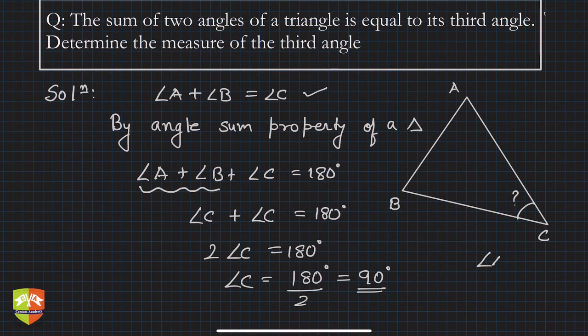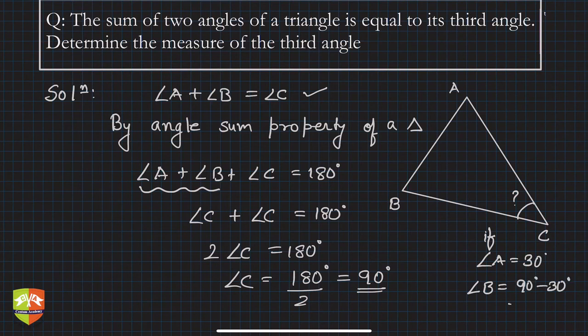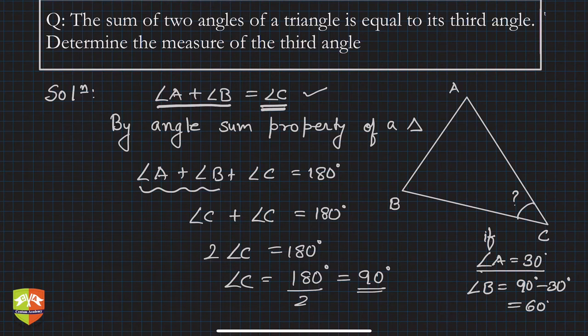In the same problem, let's say if angle A is given as 30 degrees, then you can find angle B as well. Angle B will be 90 minus 30, which is 60 degrees. So angle B will be 60 degrees if angle A is 30, because A plus B was 90, which was equal to angle C.